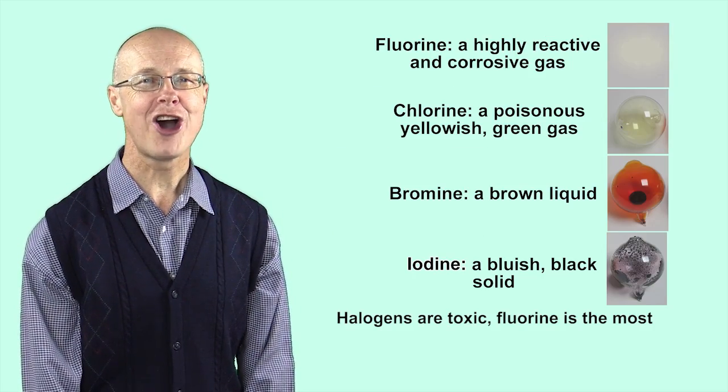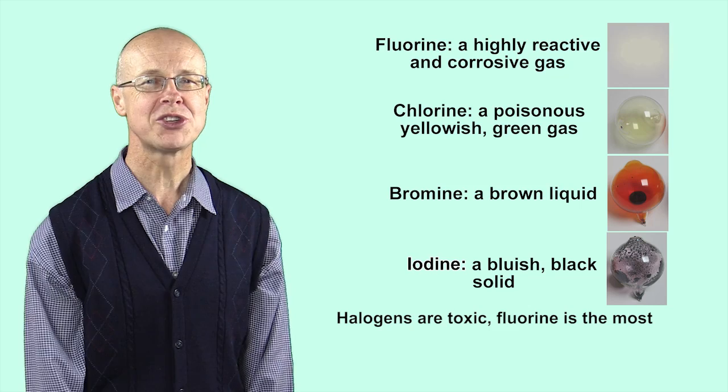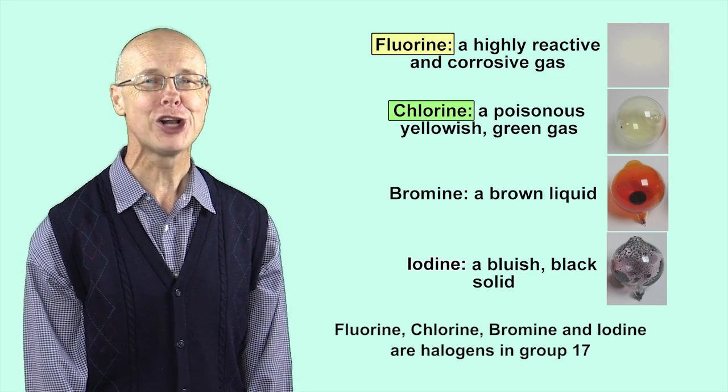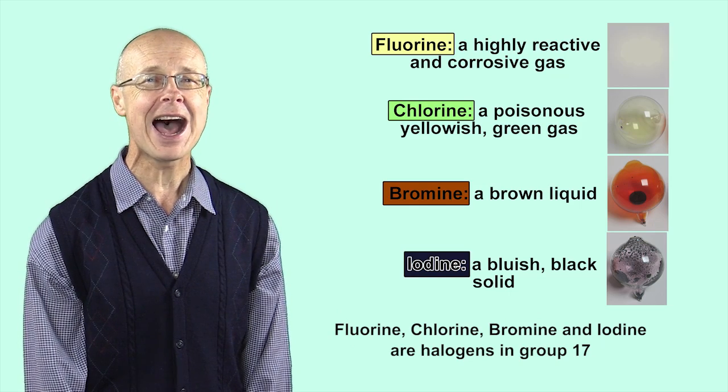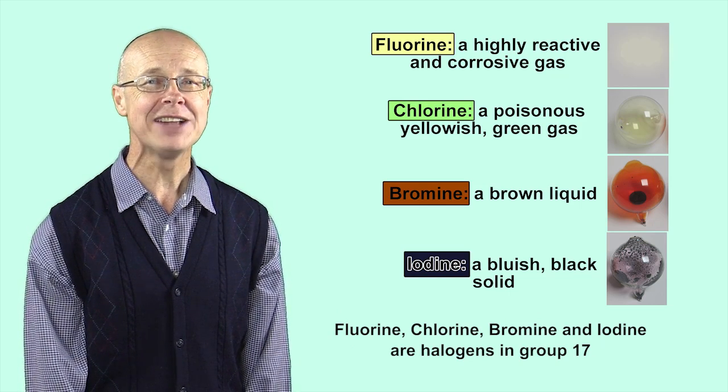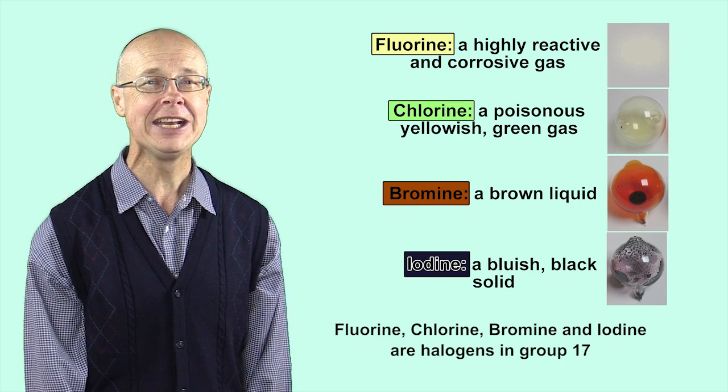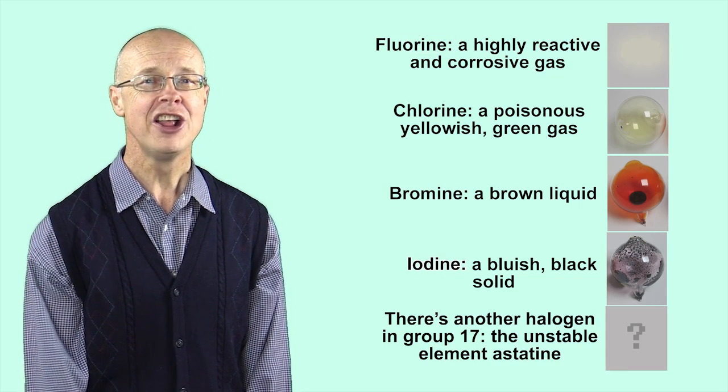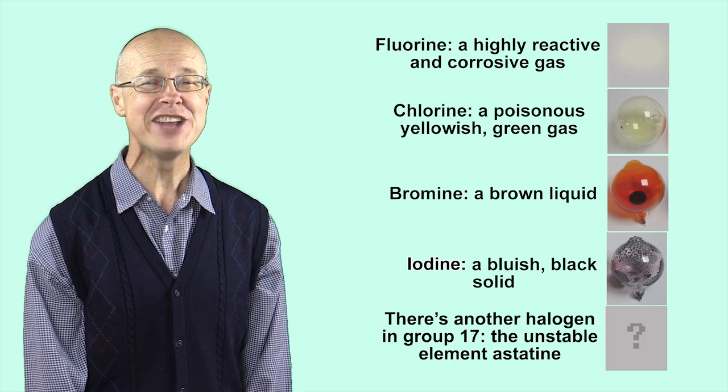Halogens are toxic, fluorine is the most. Chlorine gas is dangerous in a tiny dose. Fluorine, Chlorine, Bromine and Iodine are halogens in group 17. There's another halogen in group 17: the unstable element astatine.